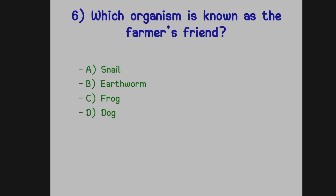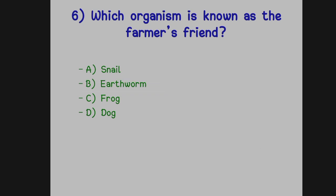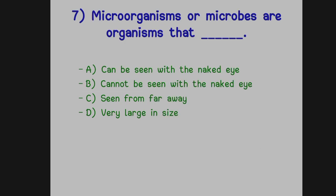The next question: which organism is known as the farmer's friend? Option A: Snail. Option B: Earthworm. Option C: Frog. Option D: Dog. The correct answer is earthworm — earthworm is called the farmer's friend because it loosens the soil and increases its fertility.